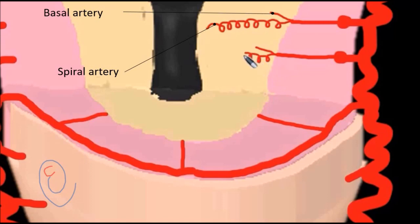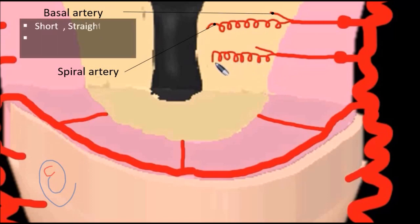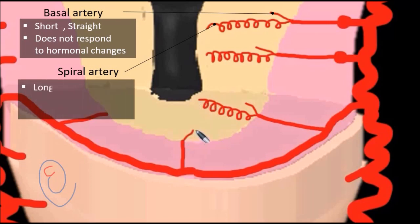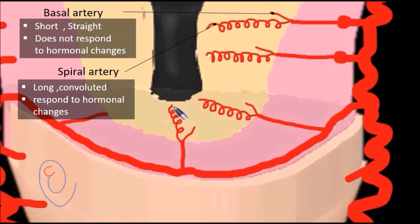The basal artery is a short, straight artery that supplies the basal part of the endometrium and is not responsive to hormonal changes. The spiral artery is a long, highly convoluted artery that supplies the functional layer of the endometrium. The spiral artery responds to hormonal changes and plays an important role in menstruation and during pregnancy.